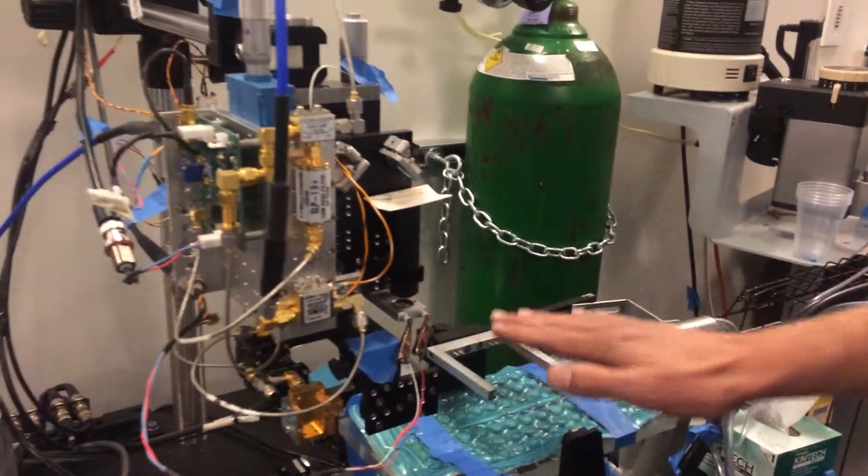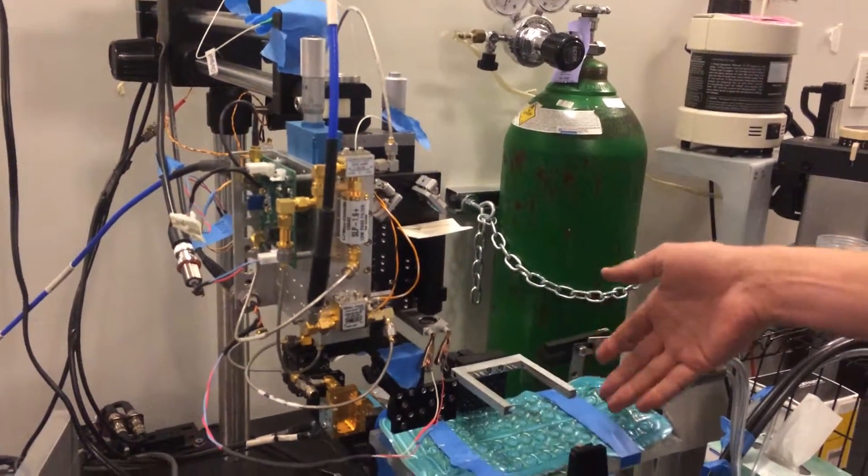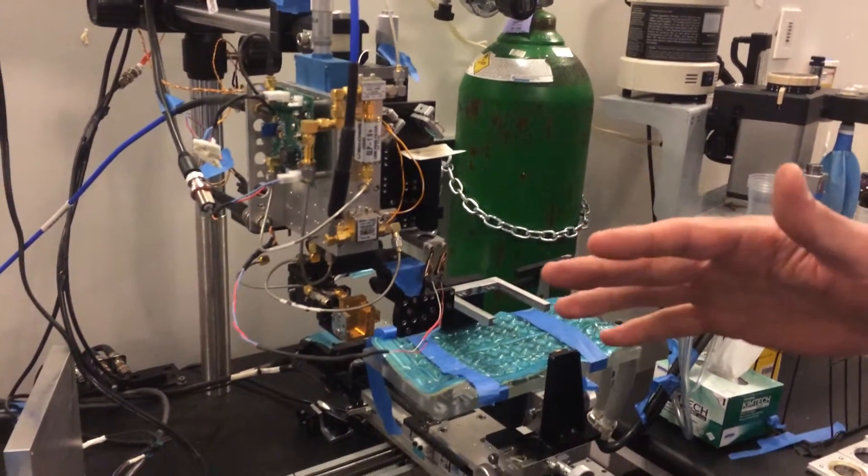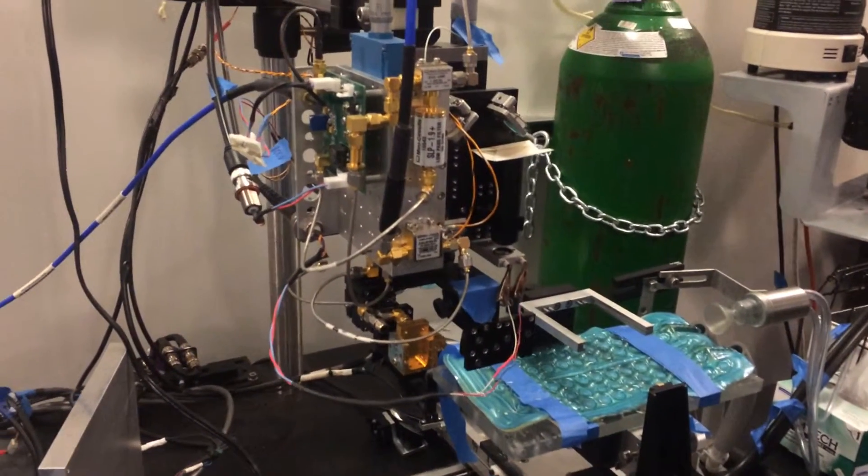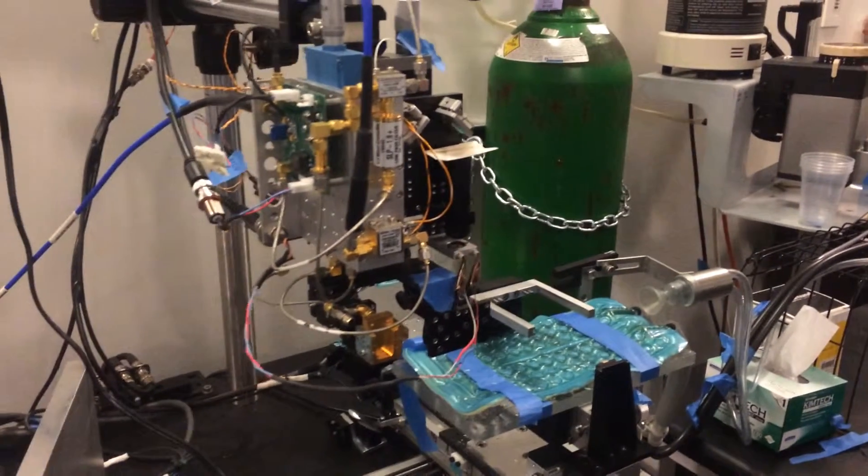And then this whole thing stays fixed and we translate the rat XY on this gantry. We take about a 50 millimeter field of view and then about a half millimeter spot size or pixel size.